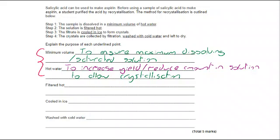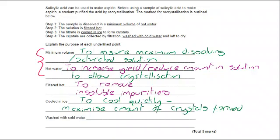If we move on to why do we filter it hot? Well, if we filter it cold, the minute that your solution touches the paper in a cold funnel, it might start to recrystallize. And we're not going to get it going through so that we can evaporate it later. So we are filtering hot to remove insoluble impurities.